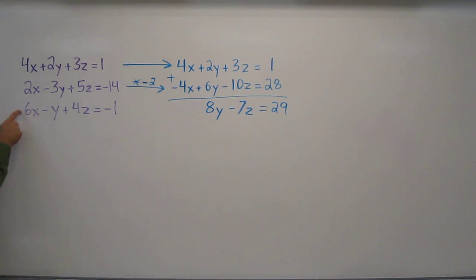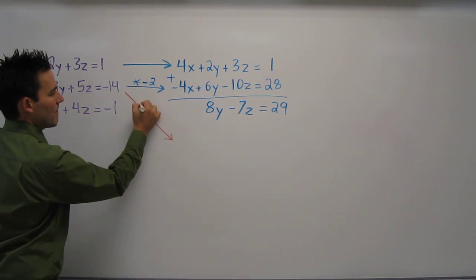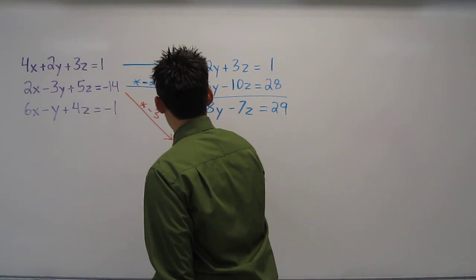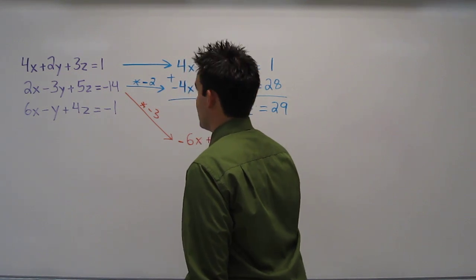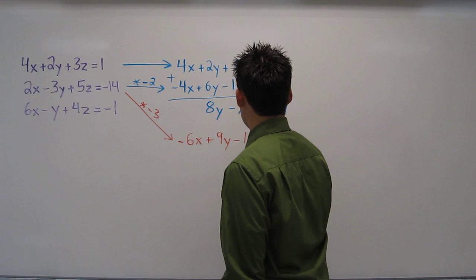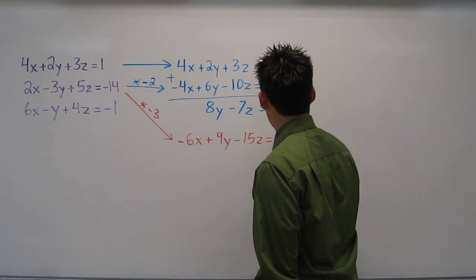This time I'm going to multiply the middle equation by negative 3. So I have negative 6x plus 9y minus 15z equals 42.